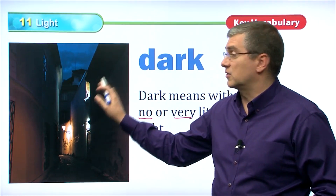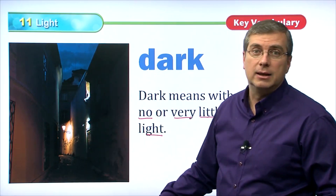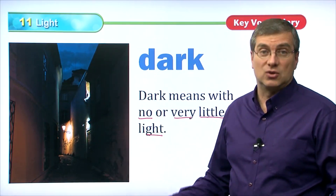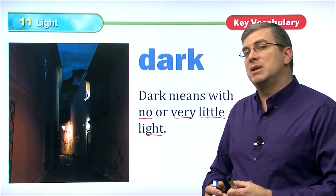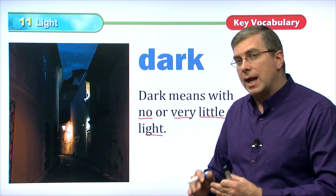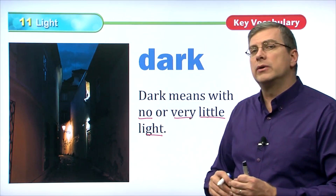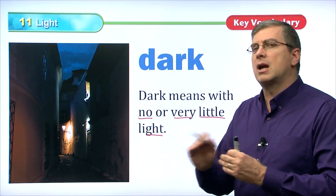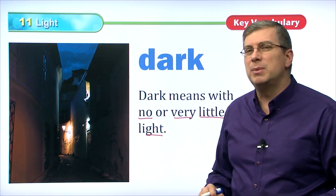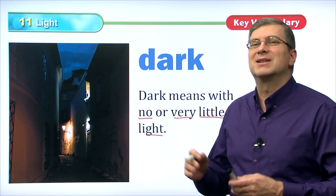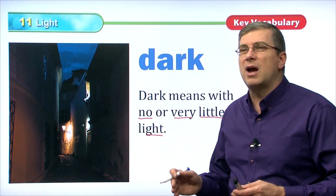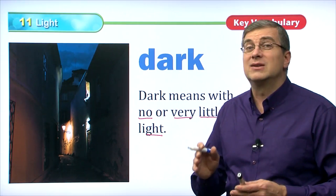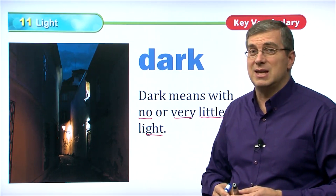Also, of course, if there's no light at all, everything's black. That's dark as well. So dark doesn't just mean no light. It can also mean little light. Sure, there might be a little bit of light, but it's still dark out. So we have to really look carefully to be able to see things.